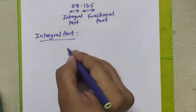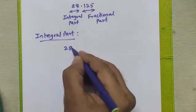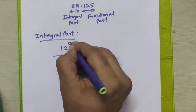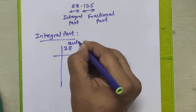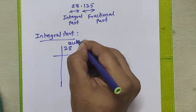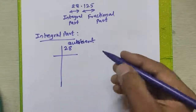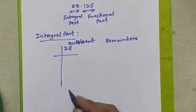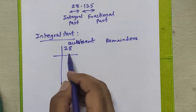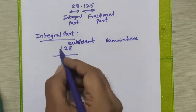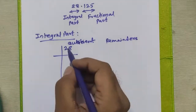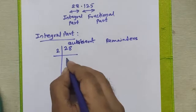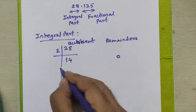We will first see how to convert the integral part 28 to binary. We will prepare a structure for division with a quotient column and a remainders column. We are going to successively divide this given decimal number by 2, till the quotient becomes 0, and for each step we write the remainder aside. First, we divide 28 by 2: the quotient becomes 14, whereas the remainder for this step is 0.